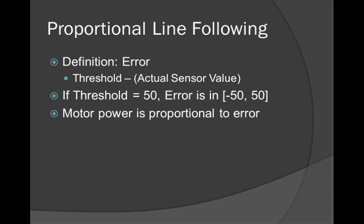There's a little bit of math in proportional line following, but I'll work you through it and show you why it works. Before we start discussing it, we need to define something called error. Error is defined to be the threshold minus the actual sensor value. Remember from the first video, the threshold is the dividing line between dark and light. So error is really what it's supposed to be minus what it really is. If your threshold is 50, the error is in the range negative 50 to 50.